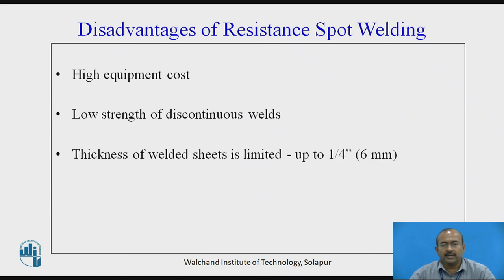Some disadvantages of resistance spot welding: high equipment cost, low strength of discontinuous welds, and thickness of weld sheet is limited — typically up to 6 mm (approximately 1/4 inch).